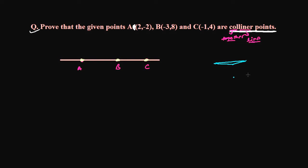If one point is here, one point here, one point here, and they are all in a straight line, then they will form a straight line. But if any one of them is a little bit shifted, then what they will do is they will form a triangle.